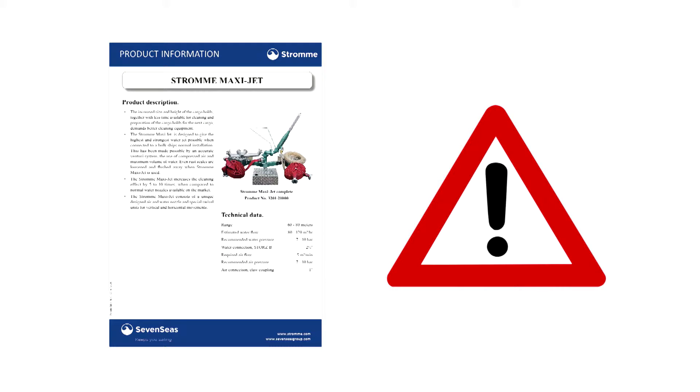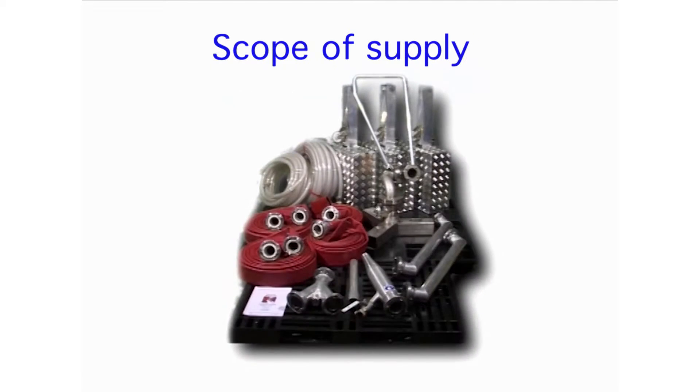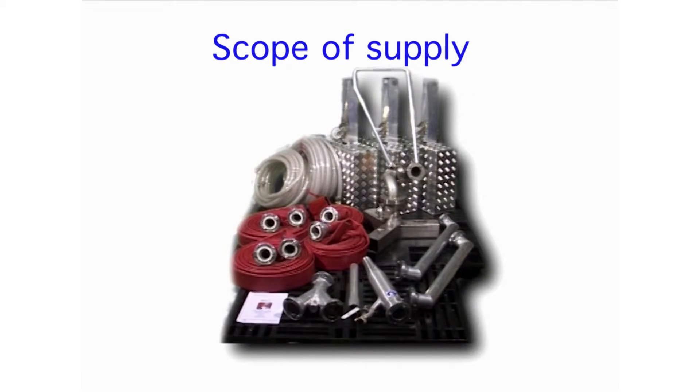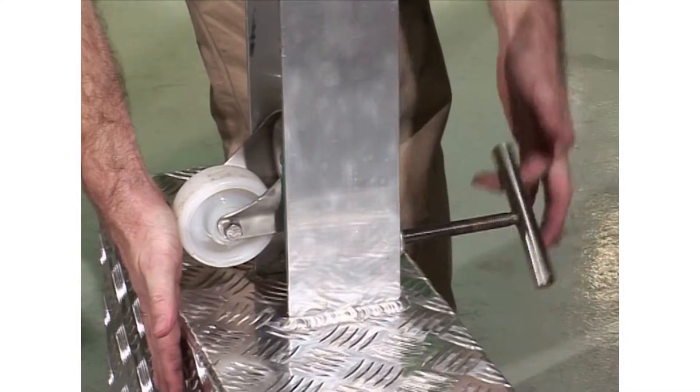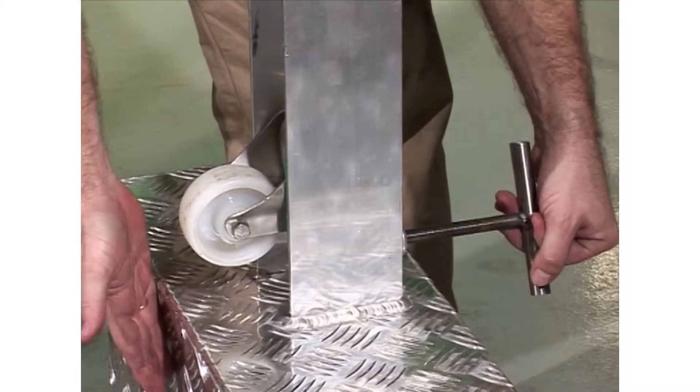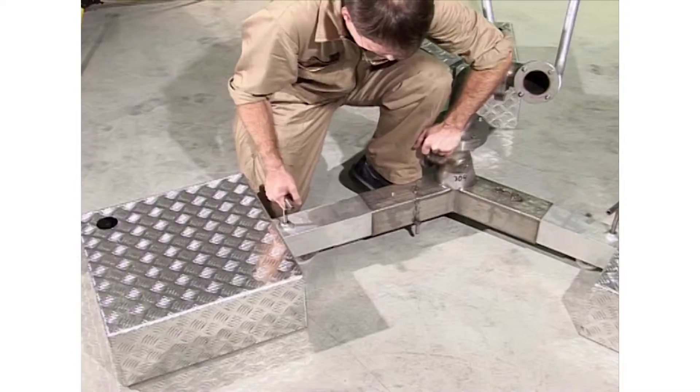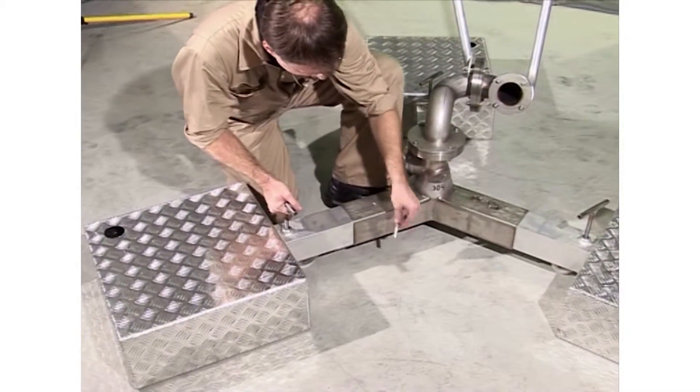The weight of the filled ballast tanks enables the Stroma MaxiJet to withstand the recoil forces of the water jet. Fit the ballast tanks to the central cross and secure them with the locking pins. Fill the ballast tanks with water.